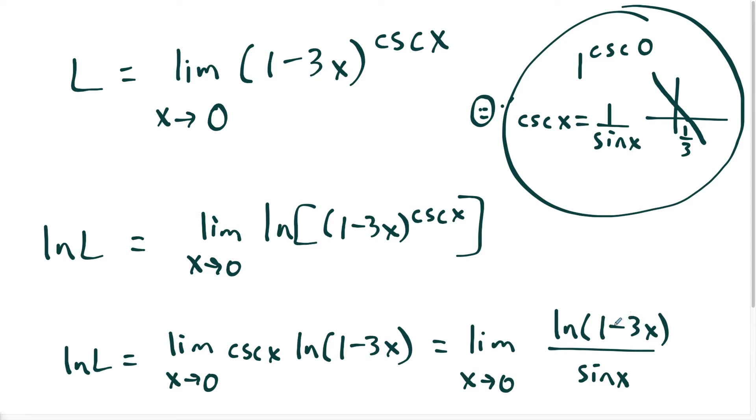And notice once again, if I plug in zero, I'm going to have natural log of one, which is zero, divided by sine of zero, which is zero. So the idea is that since I have natural log of one over sine zero equals zero over zero, this limit is still an indeterminate form. But now I could use L'Hopital's rule, because my limit is in terms of a fraction.